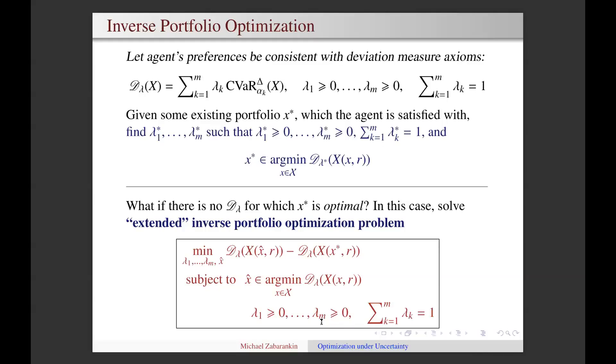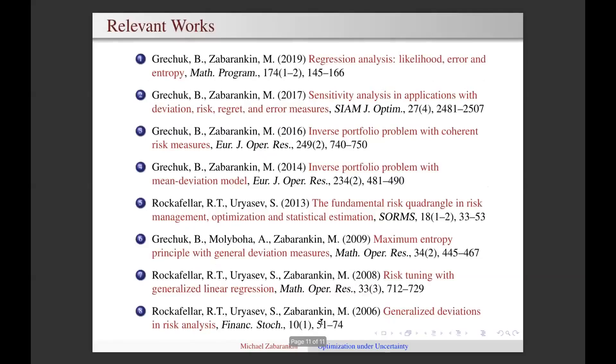In the case of a discrete probability space, this problem can be reduced to linear programming. In fact, there is no need to check whether the given x star is a true optimal portfolio, because if it is, then x hat either coincides with x star or has the same values of the deviation measure and the average rate of return so that this extended inverse portfolio optimization problem can be solved in the first place. So I would like to conclude this talk with the following list of relevant works. Thank you very much for your attention and I will be glad to answer any questions.